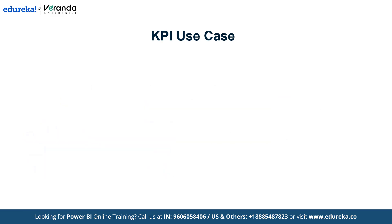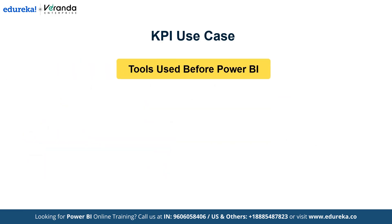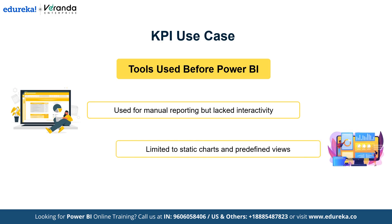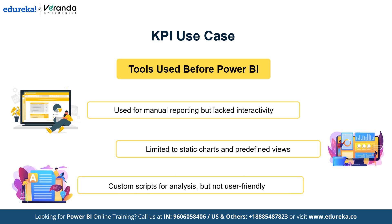Let's look at the tools Blinkit relied on before transitioning to Power BI. The first tool was spreadsheets — for example, Excel — used for manual reporting but lacking interactivity. Next were basic reporting tools, limited to static charts and predefined views. Finally, ad hoc scripts using Python or R allowed advanced analysis but were not accessible to non-technical users.